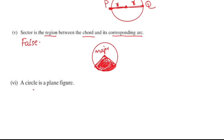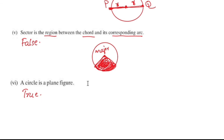Last question: a circle is a plane figure. The answer is true, because a circle is a two-dimensional figure and it can also be referred to as a plane figure. Now we have completed exercise 10.1. See you in the next video.